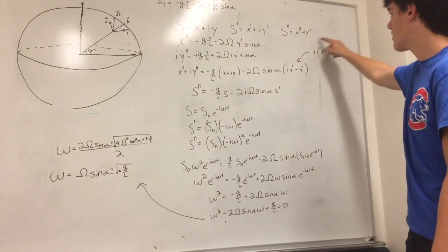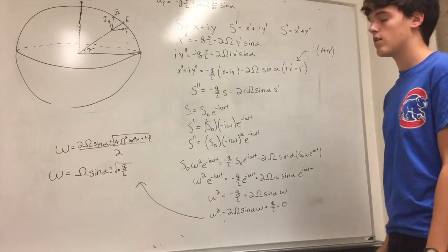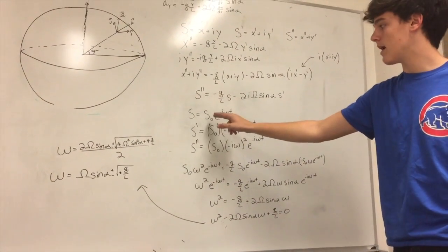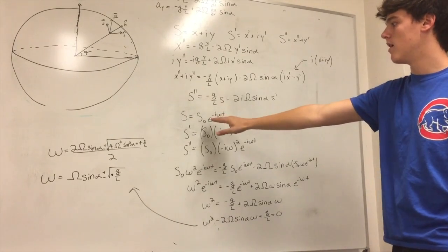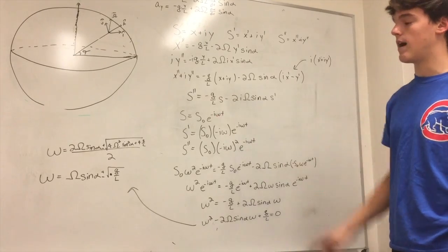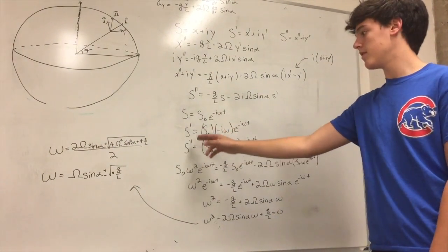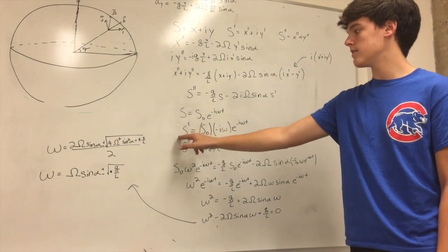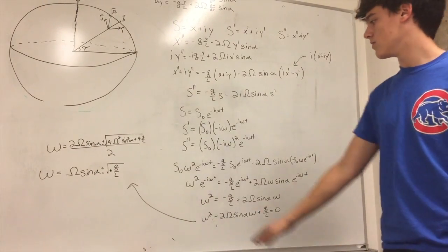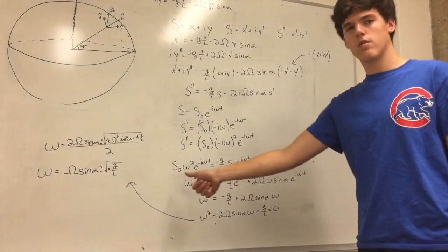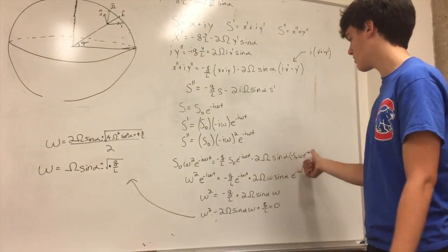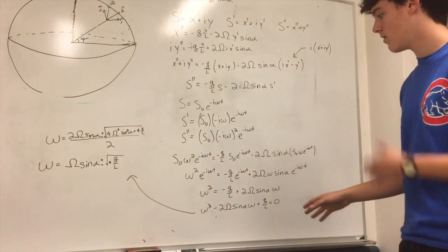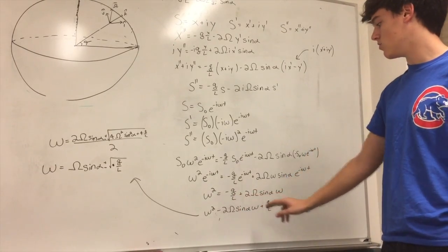We note that the extra i came from the substitution for ix prime minus y prime. In general, a solution for this type of equation comes in the form s equals some constant times e to the negative i omega t. Taking derivatives: s prime and s double prime follow by differentiating the previous expression. We substitute these values of s, s prime, and s double prime back into the equation, and the result is a long expression. But the constants cancel out since they appear in all three terms, and the e to the negative i omega t divides out, leaving: omega squared equals negative g over l plus 2 omega sine(alpha) times omega.